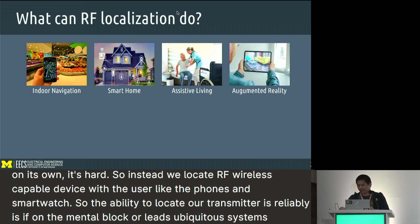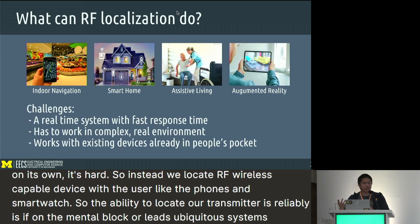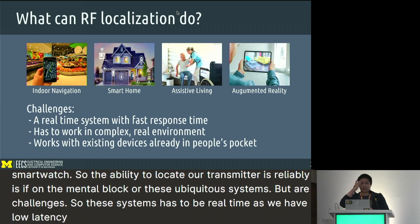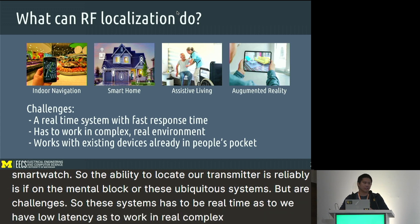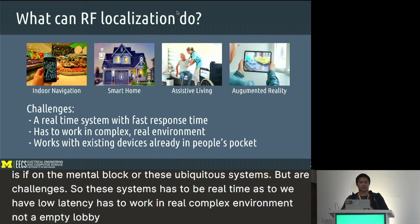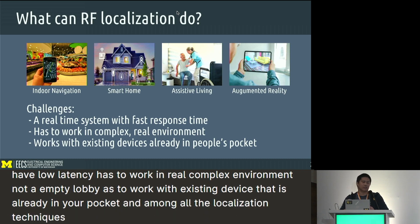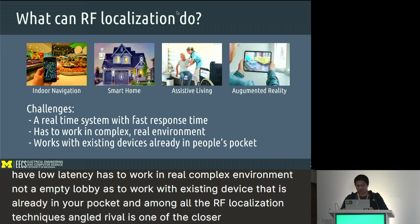But there are challenges. These systems have to be real-time, have low latency, work in real complex environments — not an empty lobby — and work with existing devices already in your pocket. Among all RF localization techniques, angle of arrival is one of the closer ones to meeting these requirements.